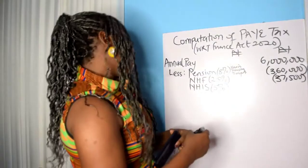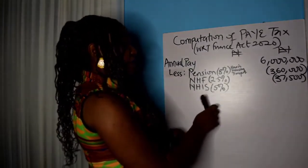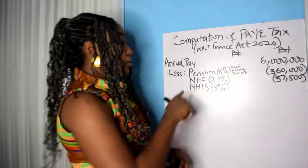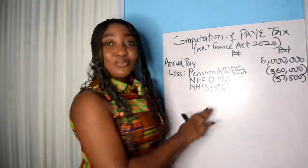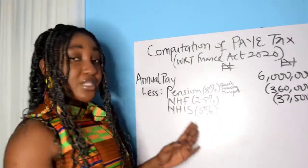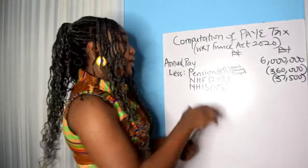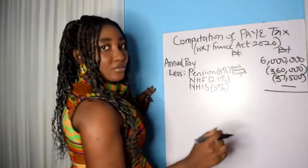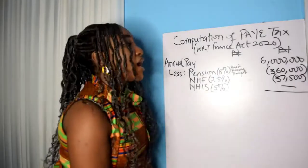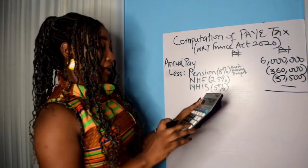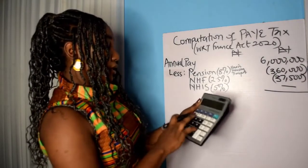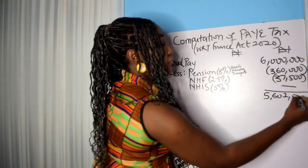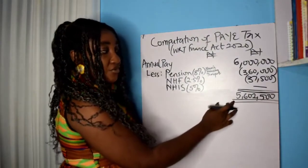Housing is 1.5 million (the portion of housing in the 6 million). So 2.5% of 1.5 million = 0.025 × 1,500,000 = ₦37,500. Then NHIS is the National Health Insurance Scheme — that's supposed to be 5% of your salary. Let's assume this company does not contribute to NHIS since it is actually voluntary, not compulsory like pension. So the deductions are: pension ₦360,000 and NHF ₦37,500. Deducting these from ₦6,000,000 gives us ₦5,602,500, which is now your redefined annual pay — or gross salary.